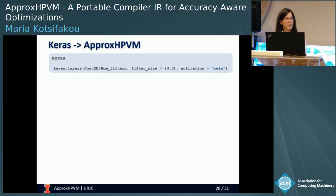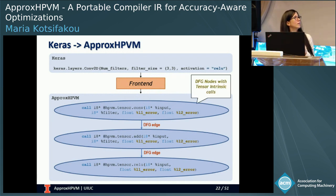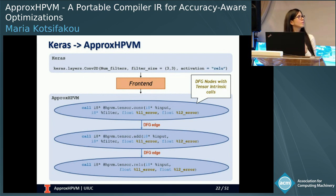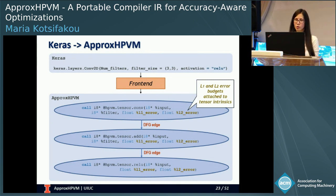As an example, here is a convolution 2D layer defined in Keras and its equivalent in ApproxHPVM. It includes data flow nodes with tensor intrinsics — one for convolution, addition, and ELU — which are the building blocks of the convolution layer. Note also the existence of the approximation metrics that would be introduced after the accuracy tuning phase.